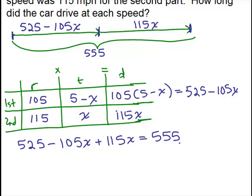Okay. So now we want to solve this equation. So I'm going to go ahead and combine like terms over here on the left side. So I have 115X minus 105X. That is going to be 10X plus 525.